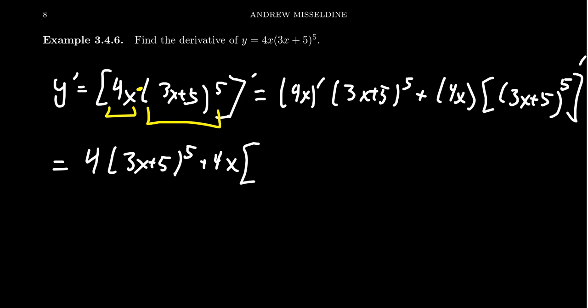You have 3x plus 5 to the fifth power. Which derivative rule are we going to use in this case? It's going to be the chain rule because you'll notice you have this inner function, 3x plus 5. We also have this outer function, that is the fifth power. It's a power function there. So by the chain rule, we take the outer derivative first.